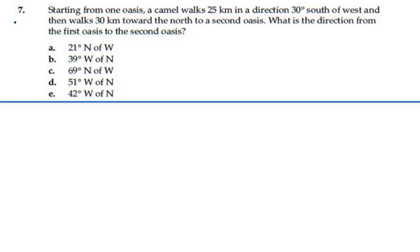Here's problem 3.7. Starting from one oasis, a camel walks 25 kilometers in a direction 30 degrees south of west, then walks 30 kilometers toward the north to a second oasis. What was the direction from the first oasis to the second oasis?